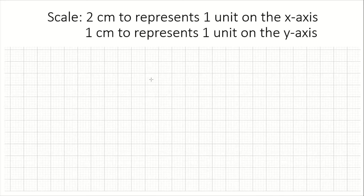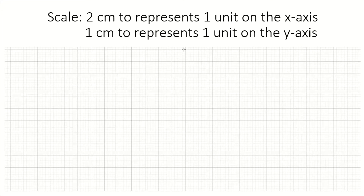In this video, we are going to look at how we draw our Cartesian system using two different scales. The scales we are going to use are two centimeters to represent one unit on the x-axis, and one centimeter to represent one unit on the y-axis. On your graph paper, you are going to draw a vertical line to represent your y-axis.